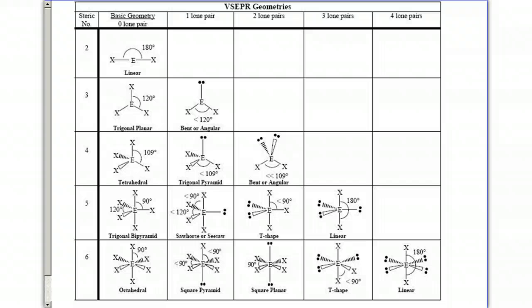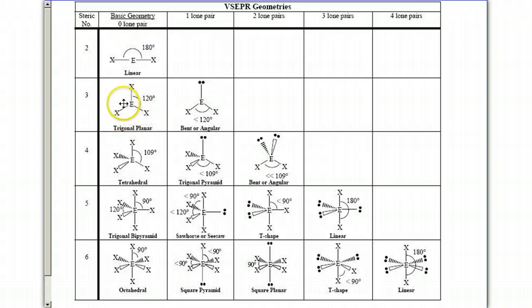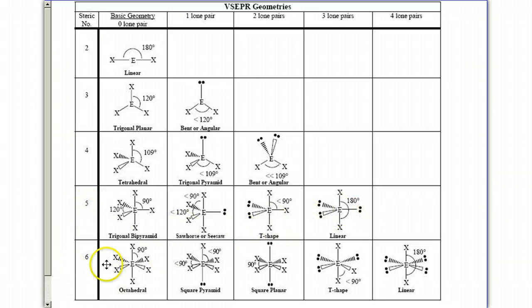Here's a quick chart to break it down: two domains has only one possible geometry and shape — linear. Three domains can give a trigonal planar shape or a bent shape with one lone pair. Four domains has three possible shapes, five domains has four possible shapes, and six domains has five possible shapes.